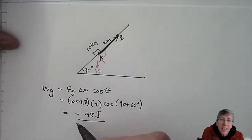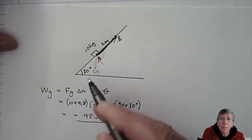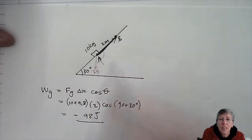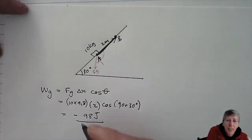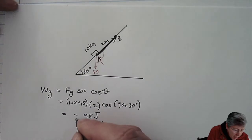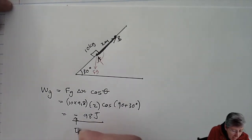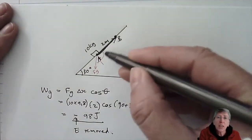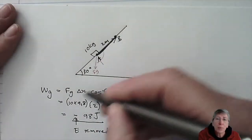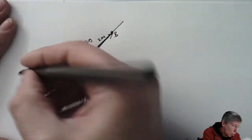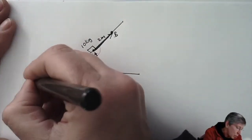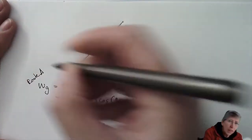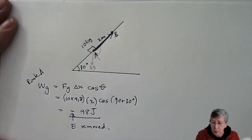Did I expect the minus? Yes, because gravity is not helping this movement — it is removing energy. The negative does not indicate direction; it indicates that energy is removed. So this is Route A — going in a straight line from A to B.